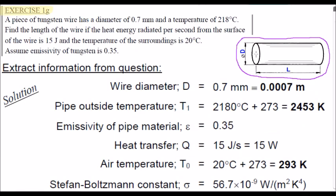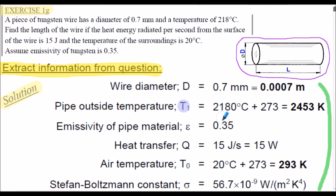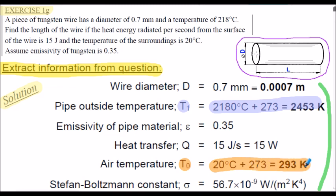Here's the beginning of the solution for exercise 1G, extracting the information from the question. As always, the outside temperature of the wire was converted to K, as was the surroundings temperature. Note that the 15 joules radiated per second means Q is actually 15 watts. Dimensions are converted into metres.